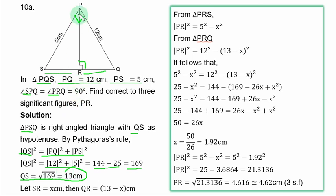With SR = 1.92 cm, PR² = 5² - 1.92² = 25 - 3.6864 = 21.3136. PR = √21.3136 = 4.616 cm. To 3 significant figures: the next digit after 4.61 is 6 (≥5), so round up: PR = 4.62 cm.